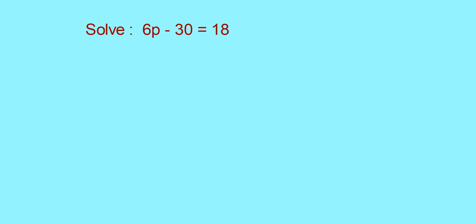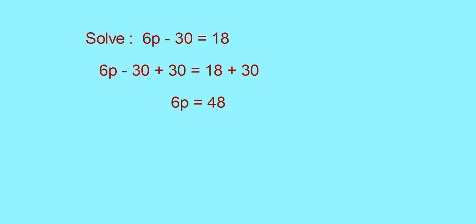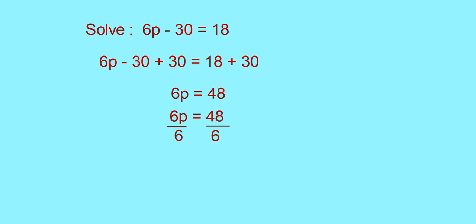How will you solve this equation? 6p minus 30 is equal to 18. First, you have to remove minus 30. For that, add 30 to both sides. So: 6p minus 30 plus 30 is equal to 18 plus 30. Minus 30 plus 30 is 0, so 6p is equal to 48. Now, to separate p, dividing both sides by 6, you will get 6p by 6 is equal to 48 by 6. The 6s cancel, so p is equal to 8 is the solution.